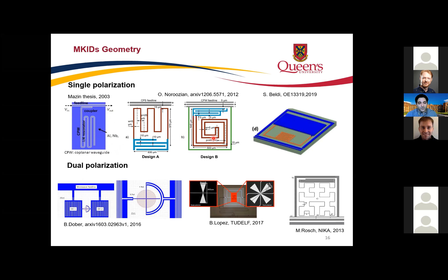The double-folded geometry shows better crosstalk performance, though absorption for single-polarization designs is slightly less than design B. For the millimeter range, the capacitive and inductive parts are on the order of millimeters in size, so filling factor is less of a concern. But for the optical range, the sensitive part is on the order of micrometers.